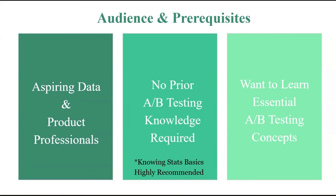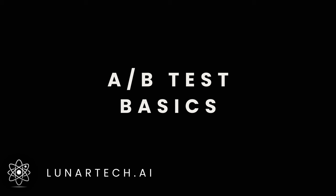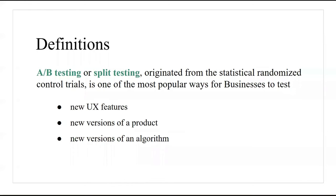In this lecture we will formally define what A/B testing is and look at a high-level overview of the A/B testing process step by step. By definition, A/B testing or split testing is originated from statistical randomized control trials and is one of the most popular ways for businesses to test new UX features, new versions of a product, or an algorithm — to decide whether the business should launch that new UX feature, productionalize a new recommender system, or create a new button or algorithm.